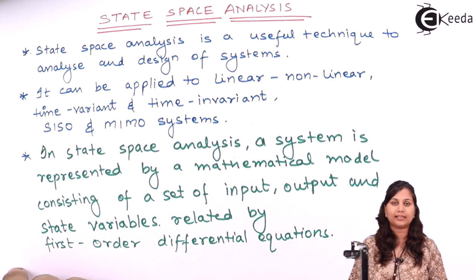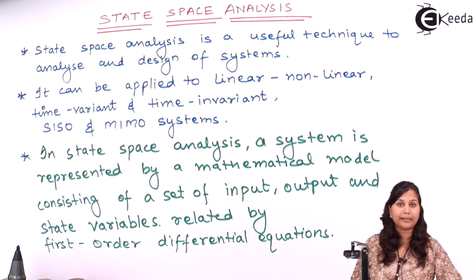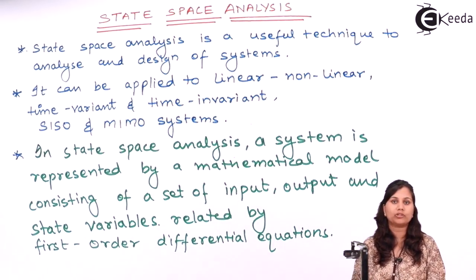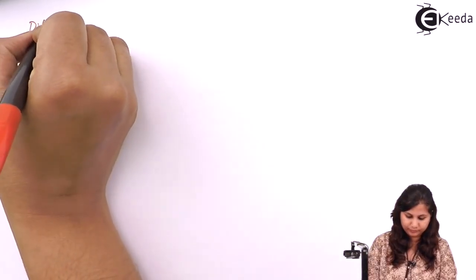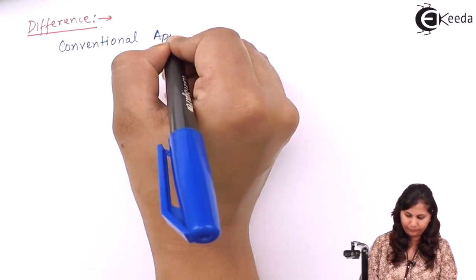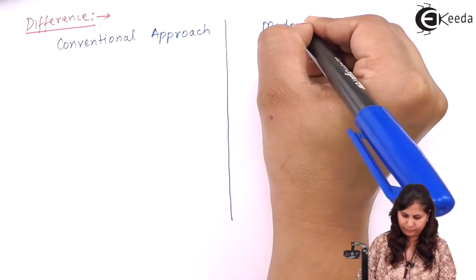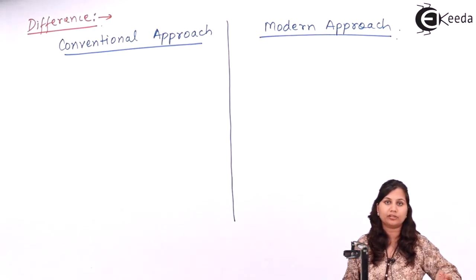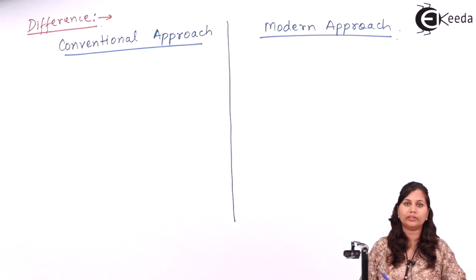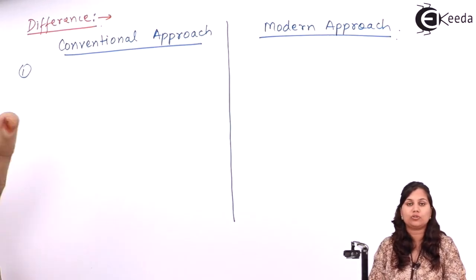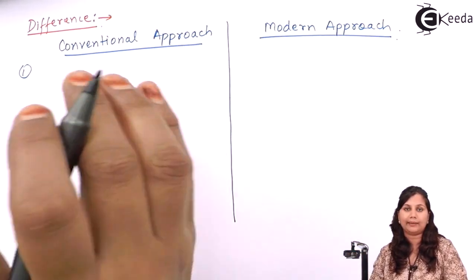The state space analysis technique is the modern control technique and it is better than the conventional technique. Let us study some differences between these two approaches. The conventional approach is also known as conventional control theory, and the modern approach is known as modern control theory. The conventional approach is a frequency domain approach, whereas the modern approach is a time domain approach.